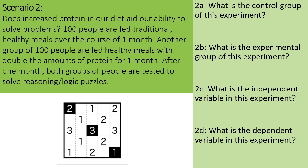Scenario number two. Does increased protein in our diet aid our ability to solve problems? 100 people are fed traditional healthy meals over the course of one month. Another group of 100 people are fed healthy meals with double the amounts of protein for one month. After one month, both groups are tested to solve reasoning and logic puzzles.